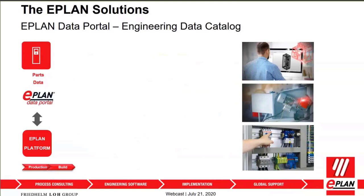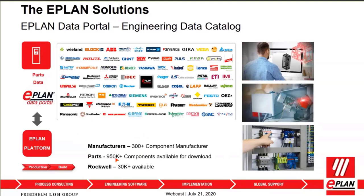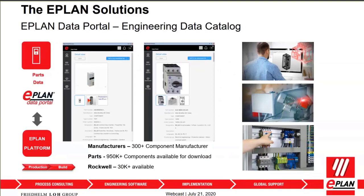The ePlan data portal is part of our cloud application, providing over 950,000 components available for download. Rockwell alone provides over 30,000 components online. A user needing a variable frequency drive simply goes to the data portal, searches the part number, clicks on it, and downloads it into their schematics. For any component — a VFD, circuit breaker, or breaker — you have the 3D model, schematics, and wiring diagram, and can drag and drop any element into your design. The data is managed by ePlan but provided and vetted by the manufacturers.